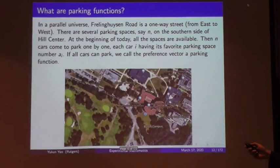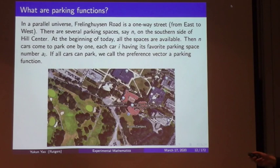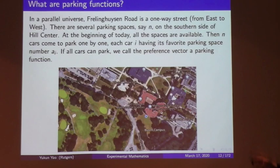Let's begin with parking functions. Here is a map of Hill Center — the blue dot is where we are now. In a parallel universe, assume Frelinghuysen Road is a one-way street from east to west, with N parking spaces on the southern side. At the beginning of the day all spaces are available. N cars come to park one by one; each car i has a favorite parking space a_i, goes there first, and if occupied, tries the next available space. If all cars can park, we call the preference vector a parking function.